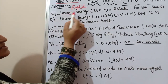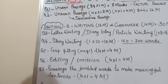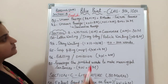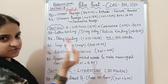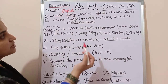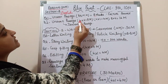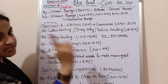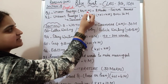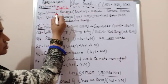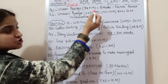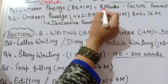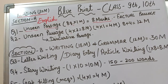Question number one is an unseen passage. The first section is reading, and you get an unseen passage there. On the left side I have written the number of questions and on the right side how many marks each question carries. Question number one is of 8 marks — there are eight questions carrying one mark each, so the total is eight marks.